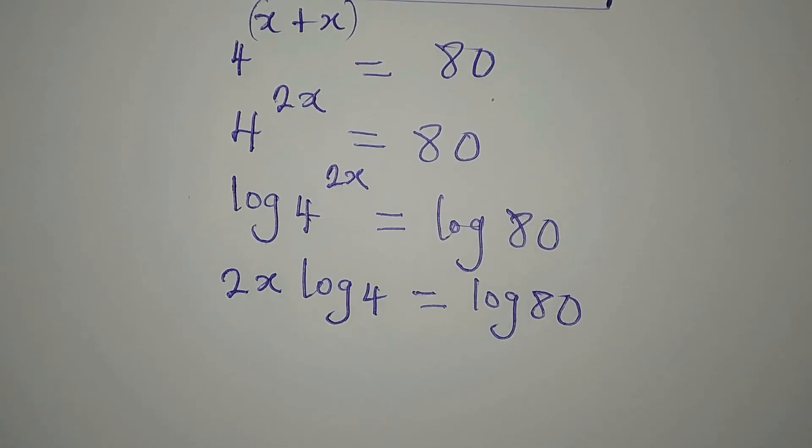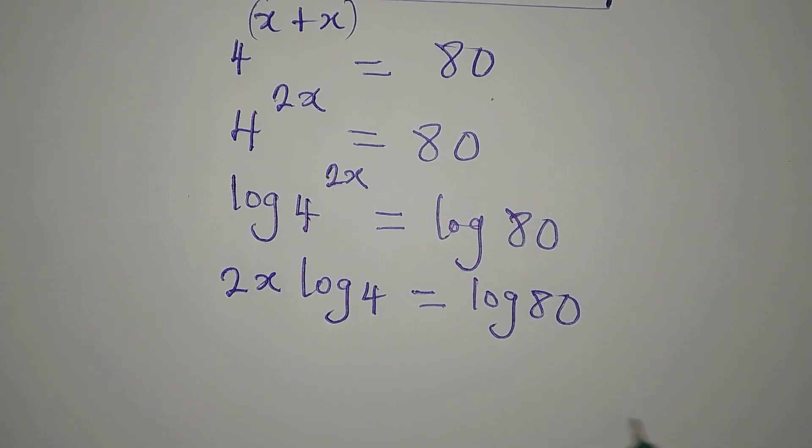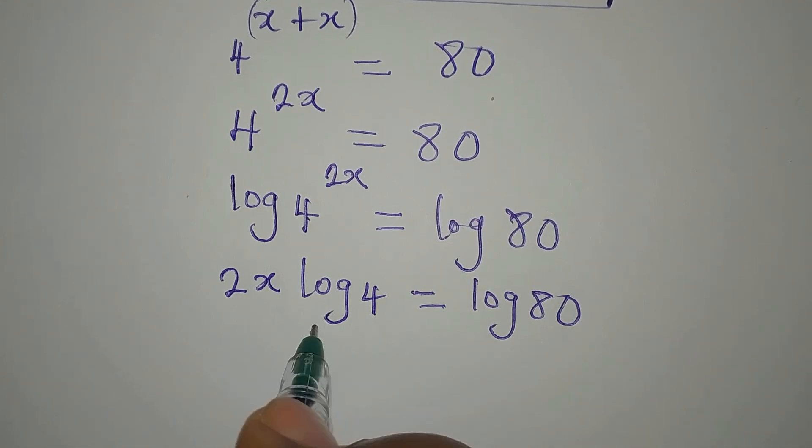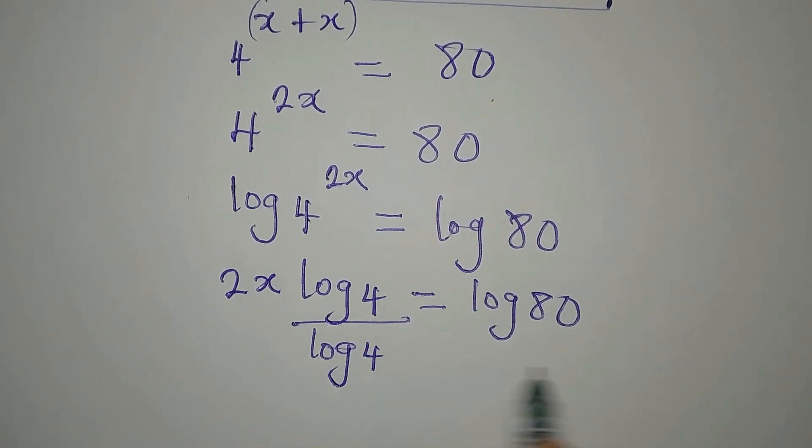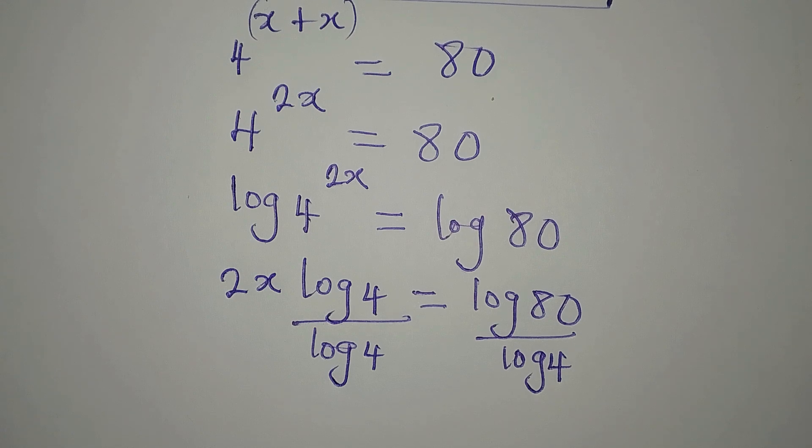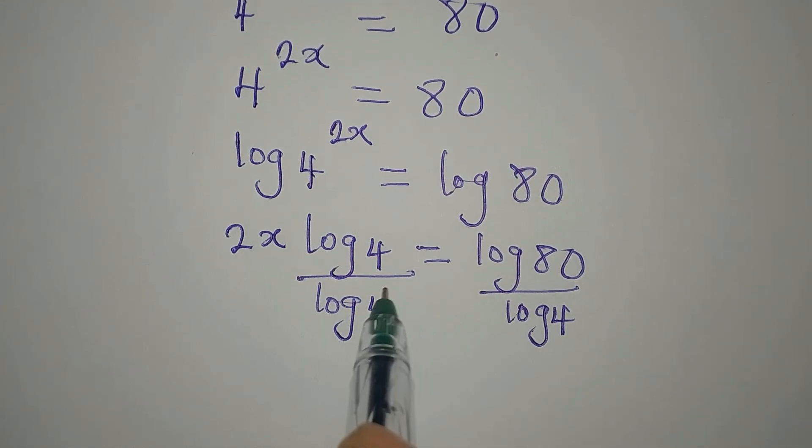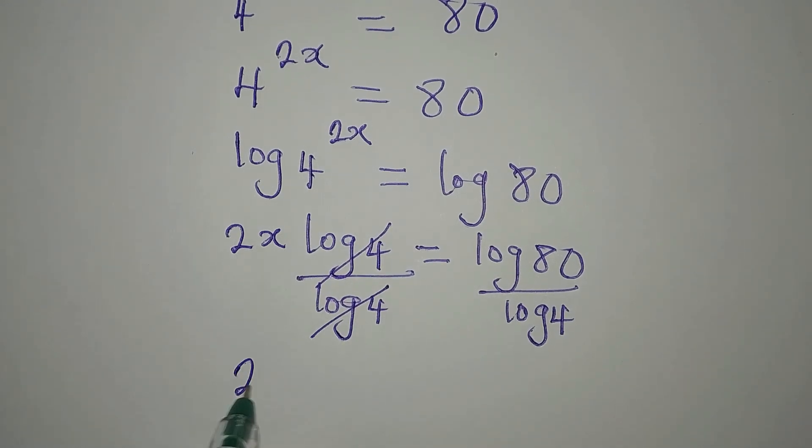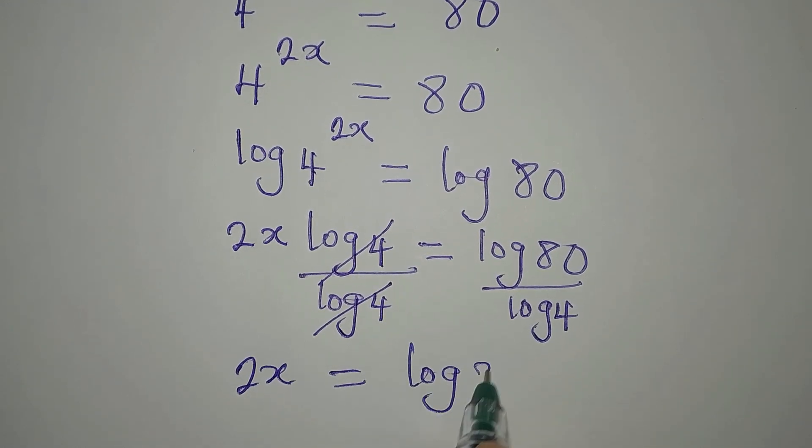But there's something we can do because we have log 4 here. Let's divide both sides by log 4 so that 2x will be free. If you do the same thing on both sides of an equation, you have not changed anything. So this is going there so that 2x will be equal to log 80 over log 4.